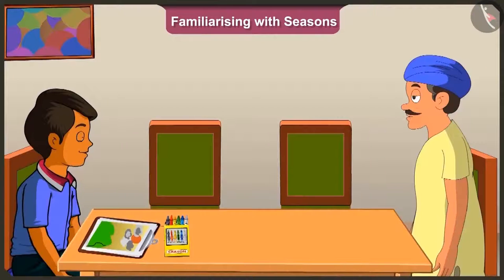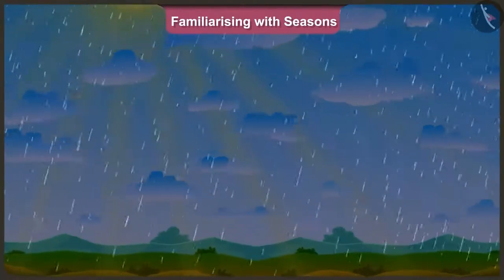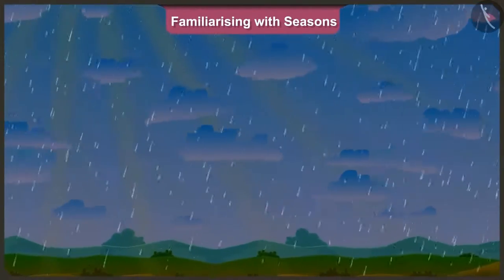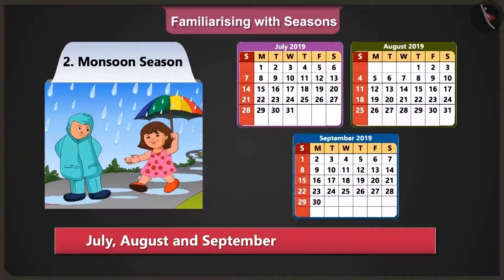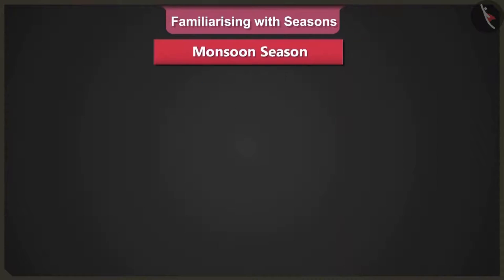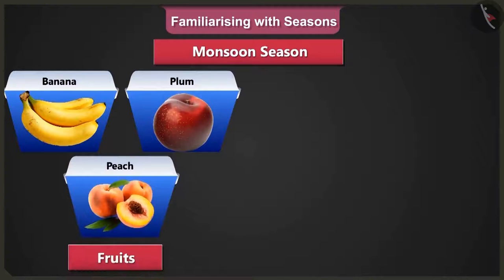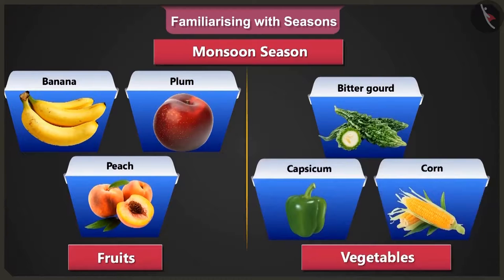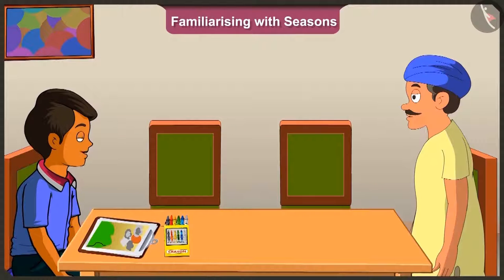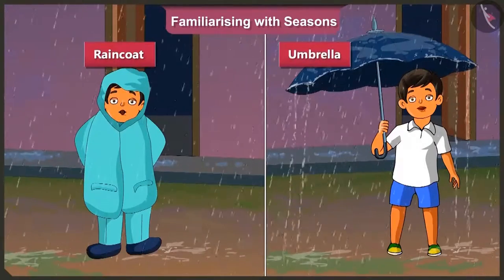After the summer season, the monsoon season arrives. It rains a lot in this season, and sometimes the sun hides behind the clouds. In this season, we use raincoats and umbrellas to avoid getting wet in the rain.